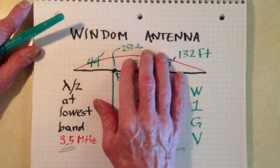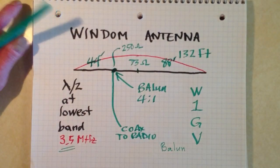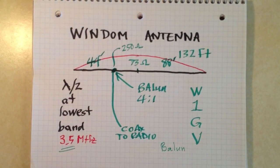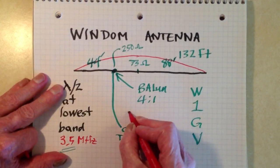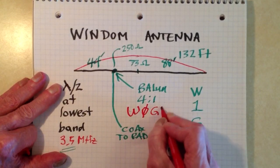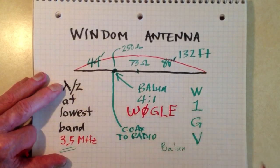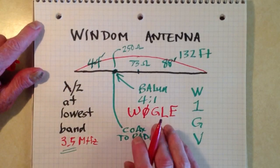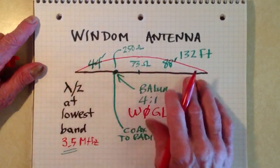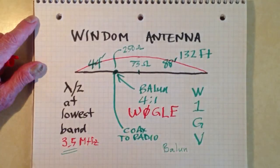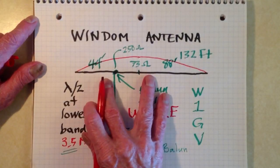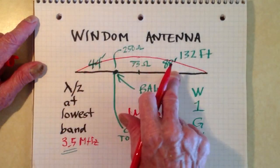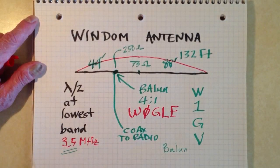Now, I knew a ham who was my Elmer way back in the 1960s. His call sign was W-0-G-L-E. His name was Bill. Bill Hornseth, as a matter of fact. And he had a Windom antenna, just like that. Although I think it might have been half these dimensions, 22 and 44 feet. So his lowest band would be 7 megahertz.